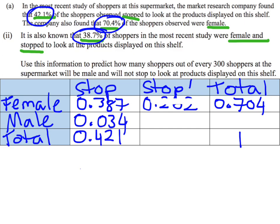I need to go back and correct a typo there — when I subtract it, it should give me 0.317. I was looking up the wrong row on my piece of paper, sorry.